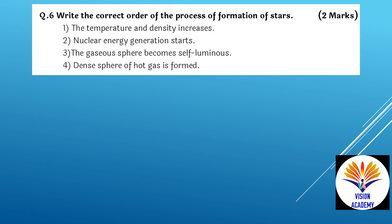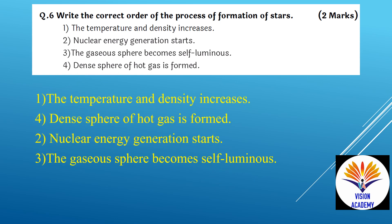Write the correct order of the process of formation of stars. First, the temperature and density increases. Then, a dense sphere of hot gases forms. Next, nuclear energy generation begins in the star. Finally, the gaseous sphere becomes self-luminous.